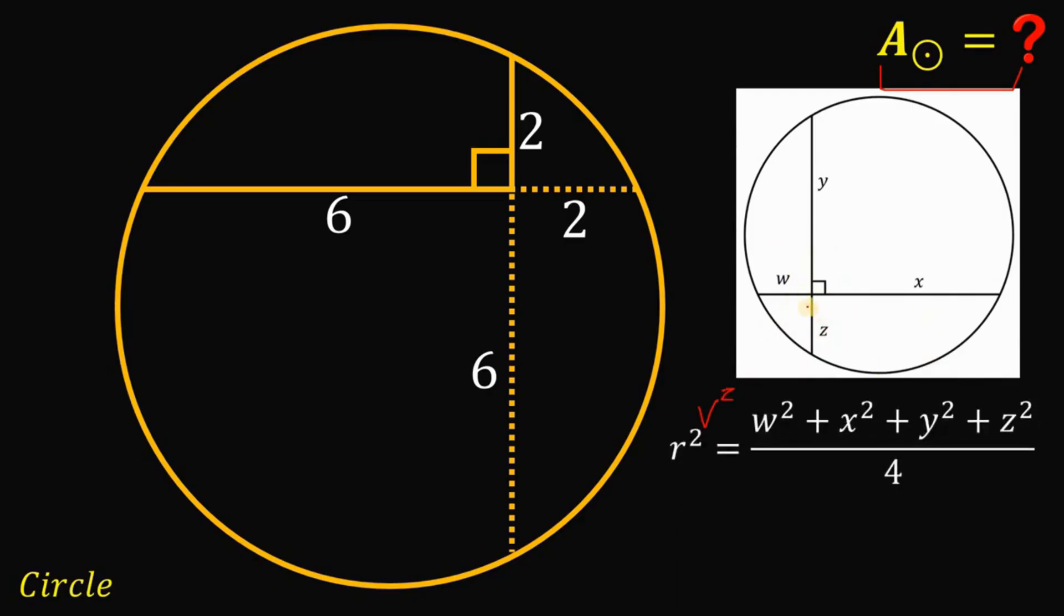So, given this figure, take note that these two chords are perpendicular to each other. So, we have r squared or the length of the radius raised to the power of 2 must be equal to w squared